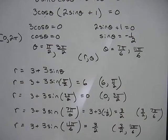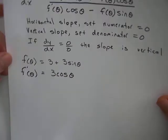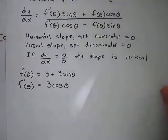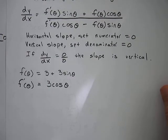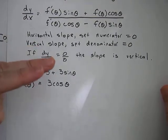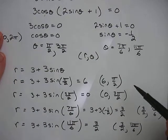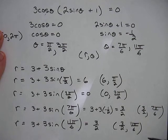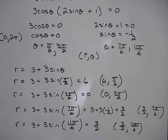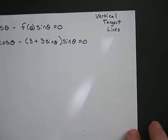Let's go back to what we noted at the beginning: horizontal slopes occur when the numerator equals 0. But if dy/dx equals 0/0, then we call the slope vertical. So we're going to hold on to these points and not yet declare them all horizontal tangent lines, because if any appears again when we do vertical tangent lines, it becomes a vertical tangent instead. Now let's look at the vertical tangent lines.